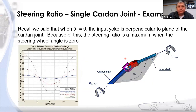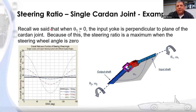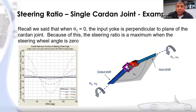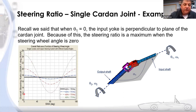If we recalled that when θ₁ = 0 the input yoke is perpendicular to the plane, that's why the steering ratio is a maximum when the steering wheel angle is zero. If we index it so that at the straight-ahead position the input yoke is in the plane, these curves flip: we get a low ratio on-center and high at 90°, then low again. So there's tuning flexibility depending on yoke phasing.